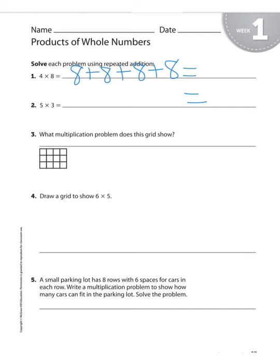Number three, what multiplication problem does this grid show? So you're going to have blank times blank and you're going to solve. Count your squares going down and count your squares going across, and that will get you your multiplication problem.